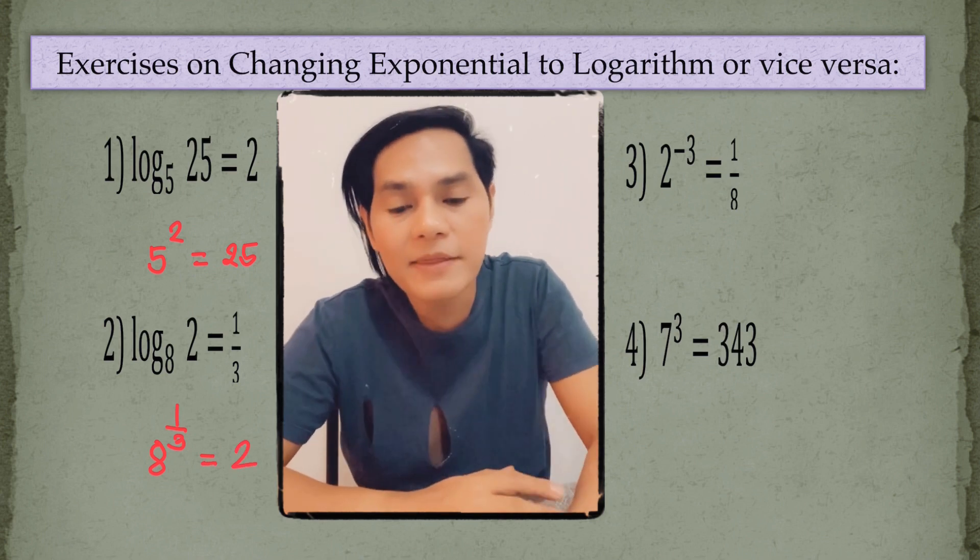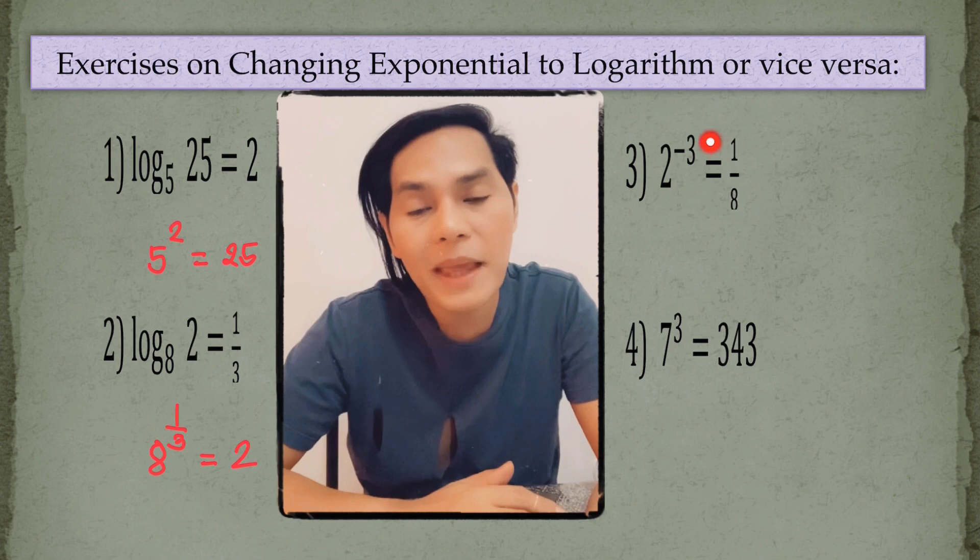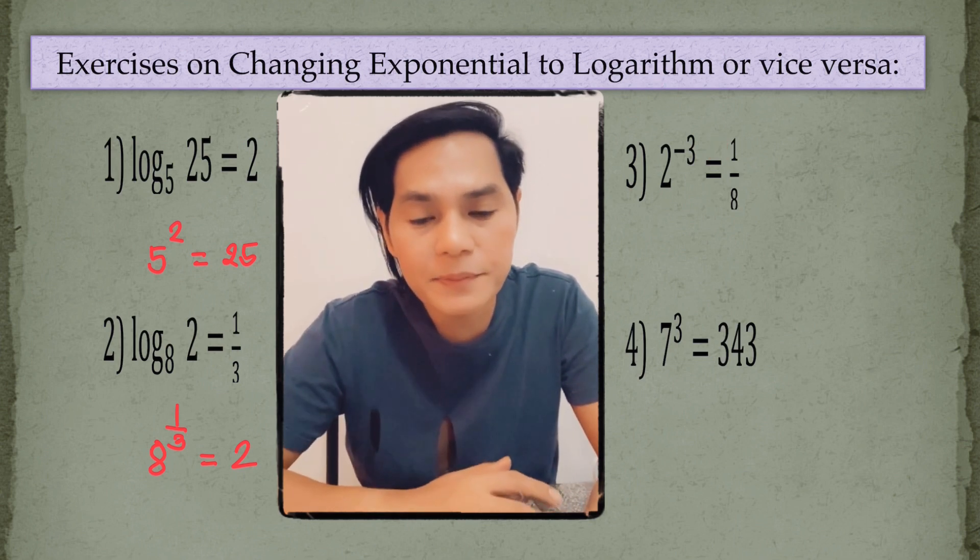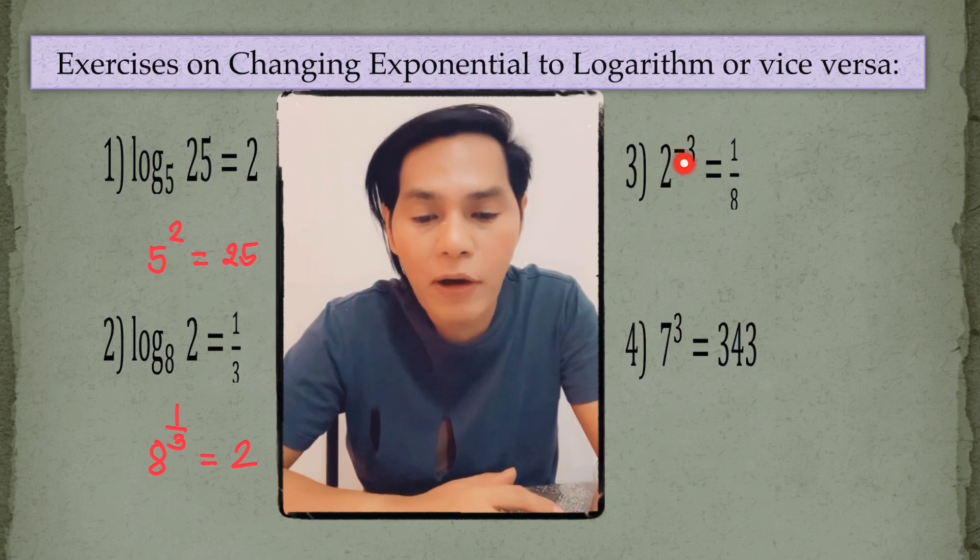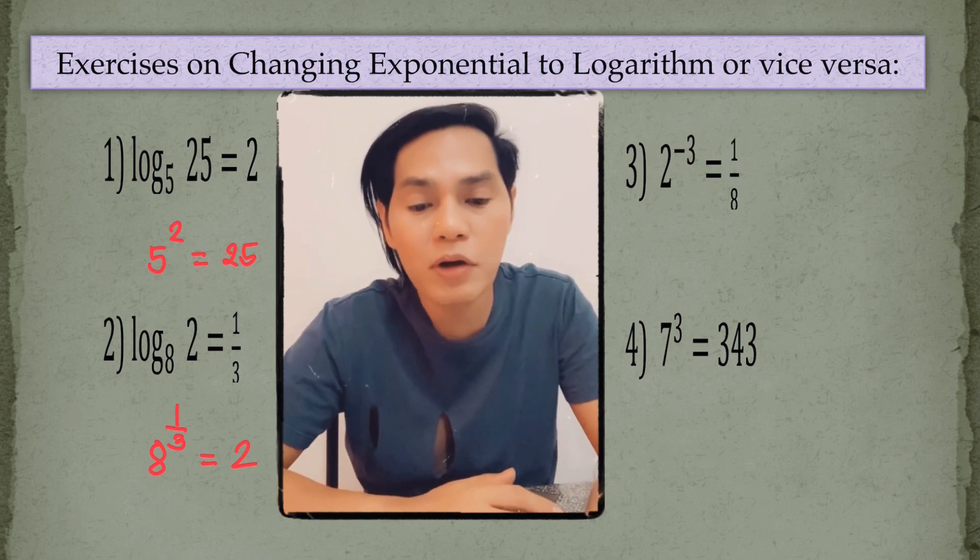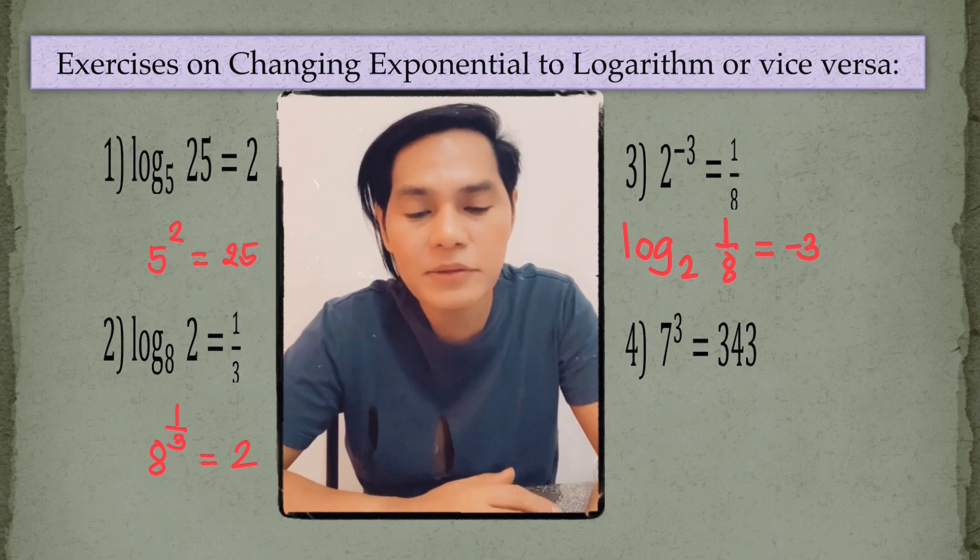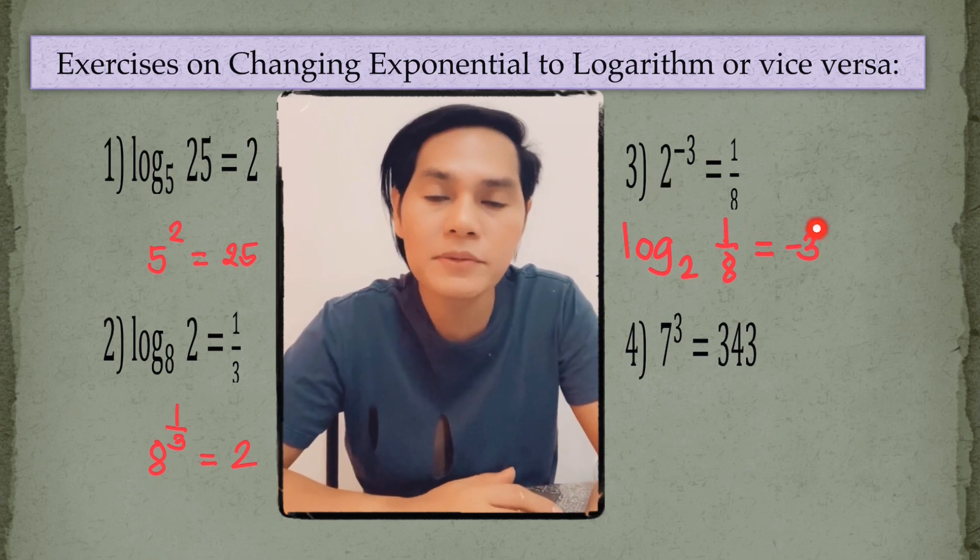Number 3 is different. This is from exponential and we are going to change it into logarithm. So, here we go. Remember that the exponent here will be an equivalent of logarithm. So, therefore, the log of 1/8 to the base 2 is equal to negative 3.